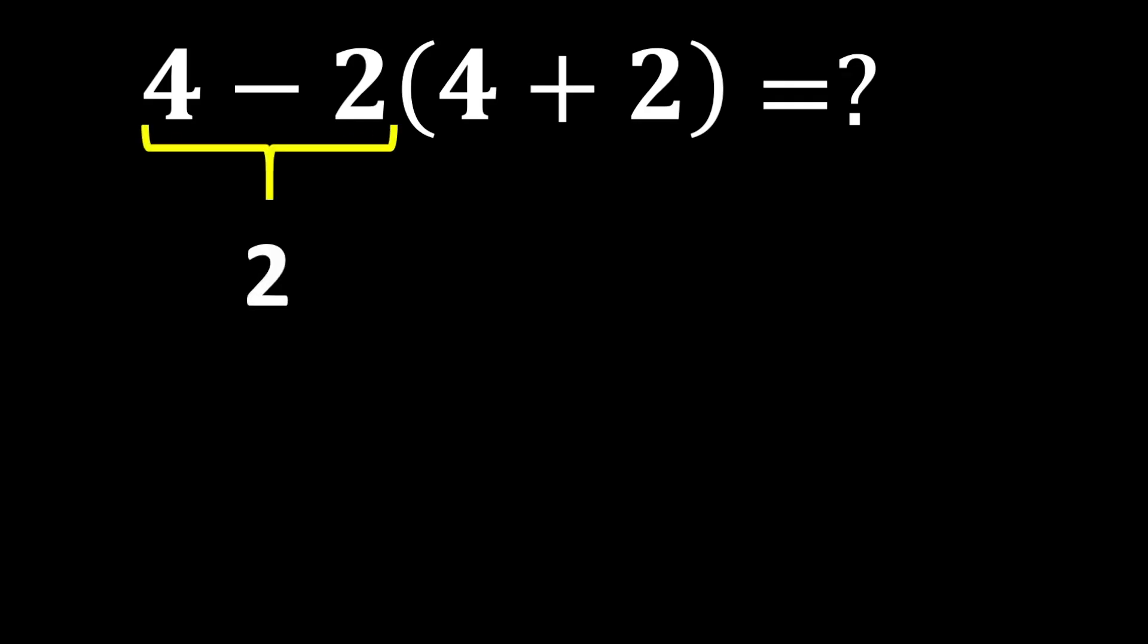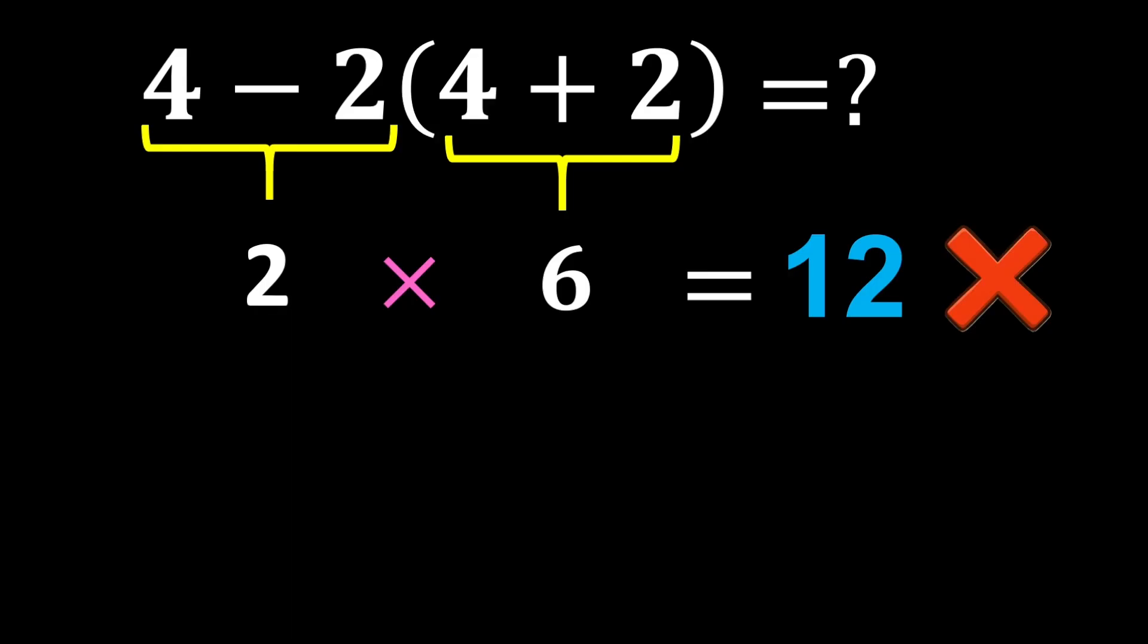4 minus 2 gives us 2, and inside the parentheses 4 plus 2 gives us 6. In the end, 2 times 6 gives us 12. But this answer is not correct because we did not follow one of the most important rules of mathematics.